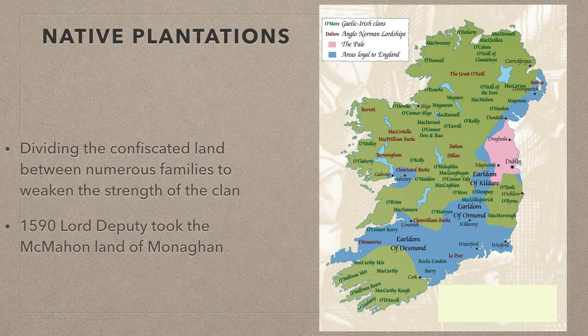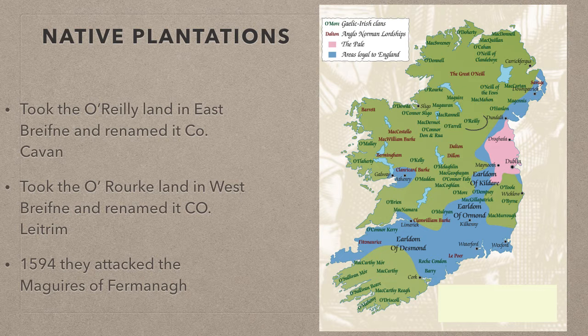The English had begun to try to expand their influence in 1590 when the Lord Deputy attacked the McMahon family of Monaghan. They defeated the leader of the McMahons and divided his land between five different families within the McMahon clan, meaning they weren't strong enough to rebel as they were divided and would have to rely on the protection of the English. This policy was known as a native plantation. It was so successful they did it again with the O'Reilly clan in East Breffney, which was renamed County Cavan, with the O'Rourke clan in West Breffney, renamed County Leitrim, and in 1594 they launched an attack on the Maguires of Fermanagh.